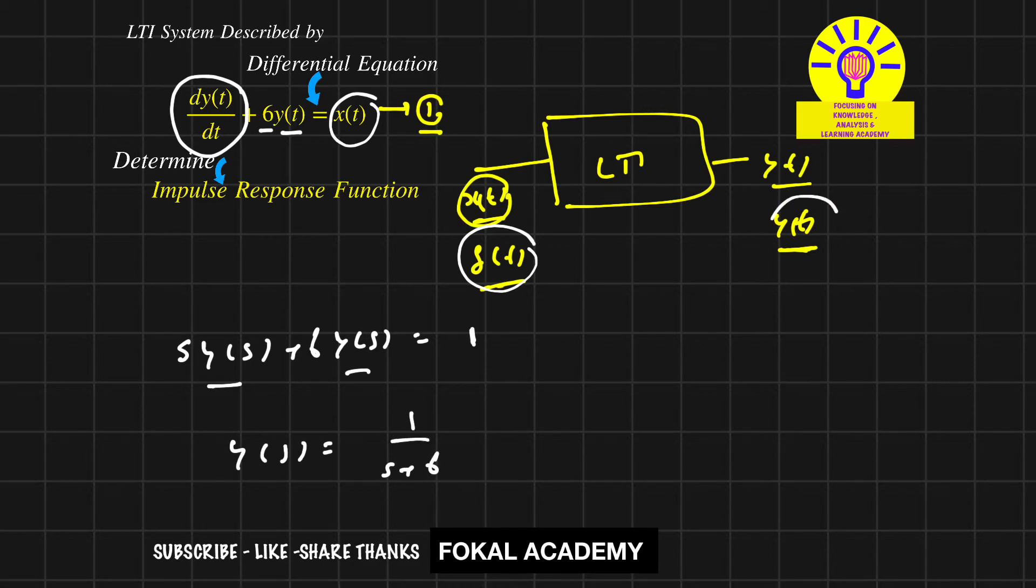Now we want the y(t). Apply inverse Laplace transform for this, we will get y(t) = e^(-6t) u(t). So this is the impulse response for the given problem. And this is the process for getting the impulse response from the differential equation.